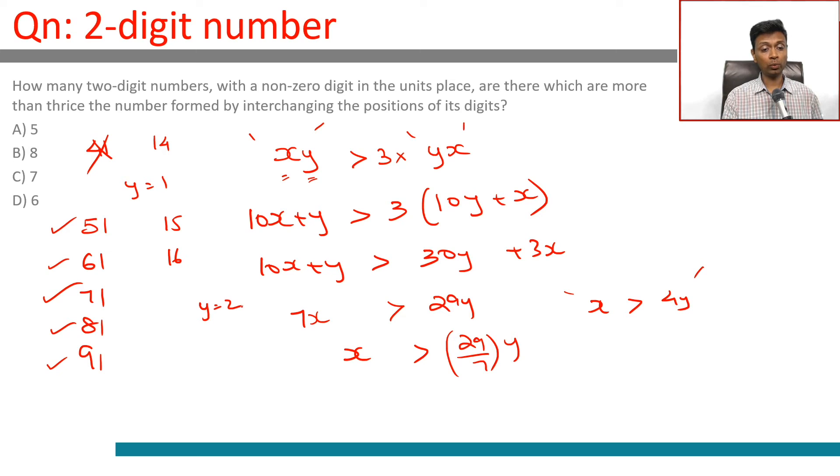We could put y equal to 2. 4 times y is 8. 82 and 28 - 82 and 28 does not work, 28 into 3 is 84. 92 and 29, that works. With y equal to 2, there's only one possibility, 92 greater than thrice 29.